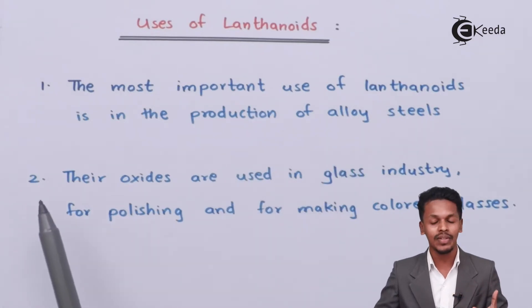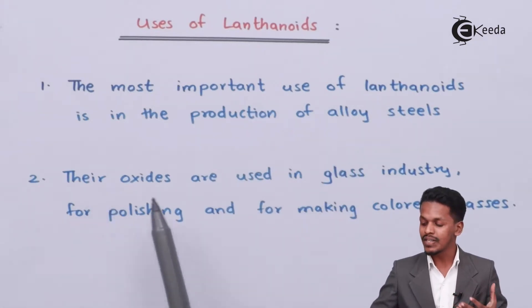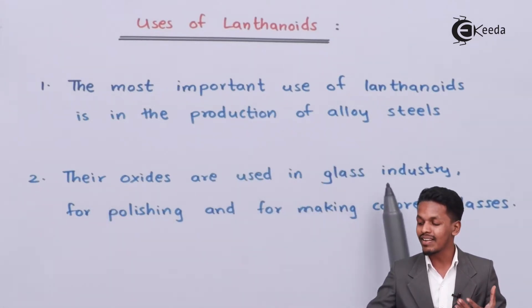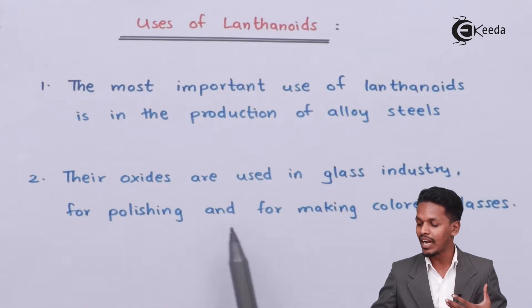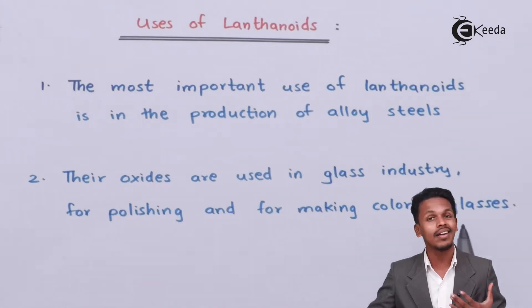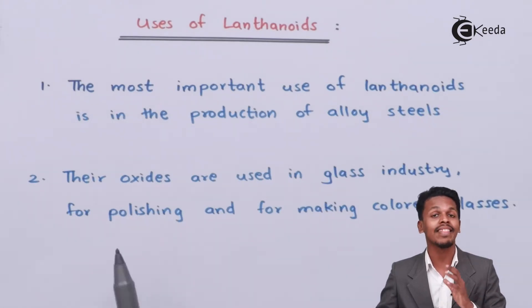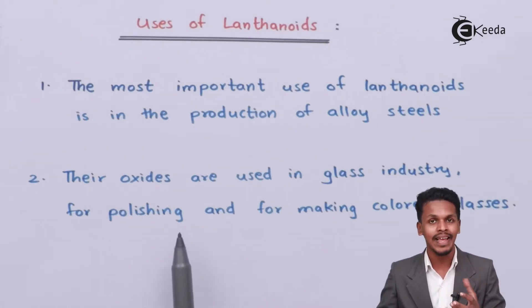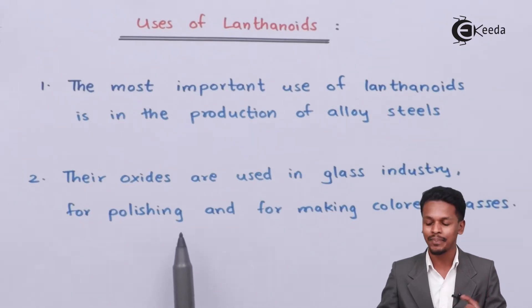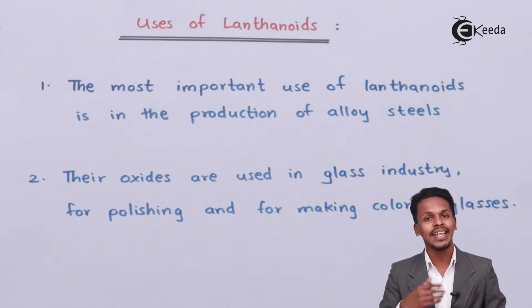The oxides are used in the glass industries for polishing and for making colored glasses, and that is basically used for making goggles that give protection from UV light.